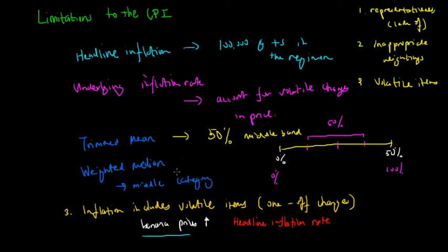The weighted median is only the middle category. As we know we have 11 categories, the middle category, which is the 50% after 50%, so the 6th largest change in inflation. The weighted median takes into account the middle band or the middle category of the 11 categories and how inflation has affected that category.